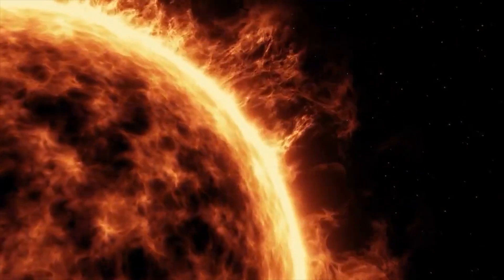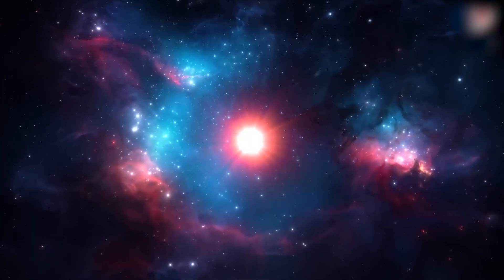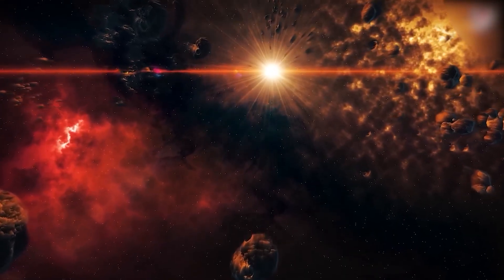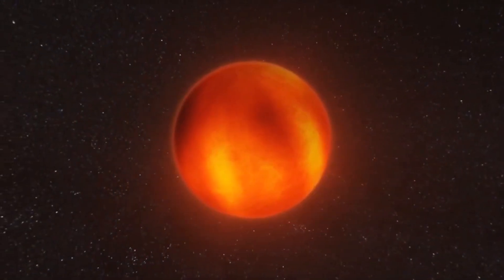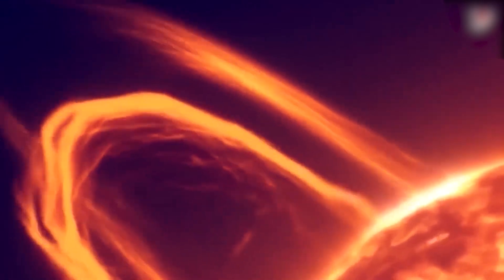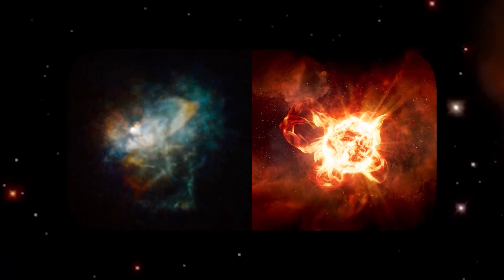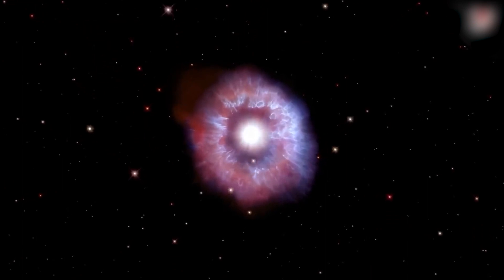VY Canis Majoris is believed to have lived just about 10 million years, whereas our sun has already lived for 4.5 billion years. Astronomers believe that this star is commencing to die, and estimates show that it has no more than 100,000 years left. Scientists have suggested that this star has lost almost half of its mass in the year 2021, and the Hubble Space Telescope has witnessed this star spitting out large threads of piping hot gas.